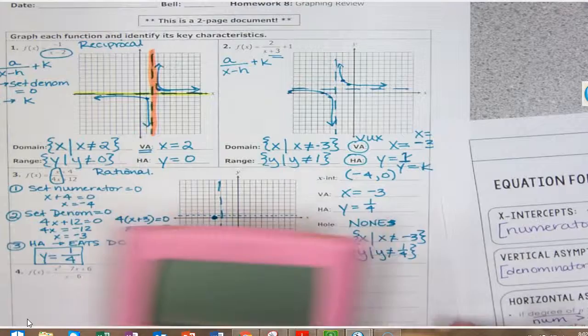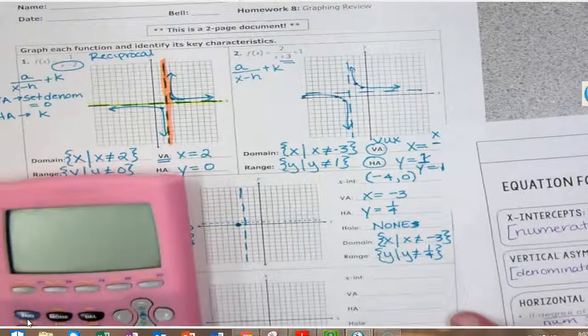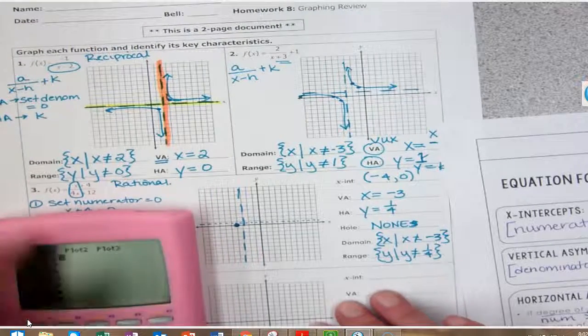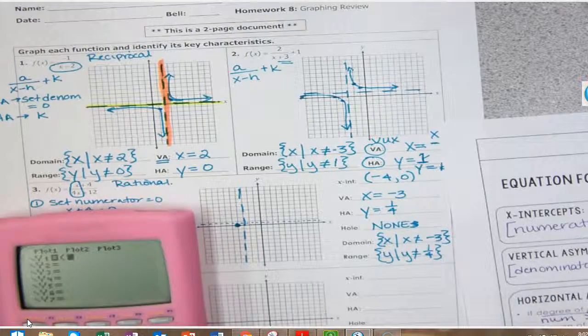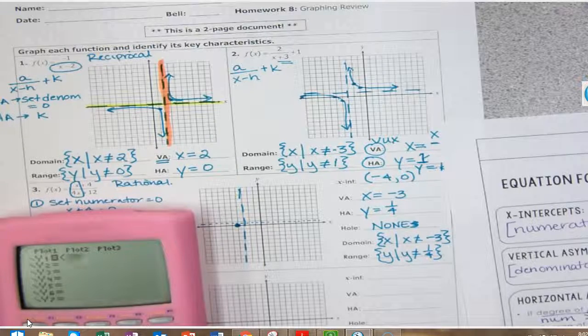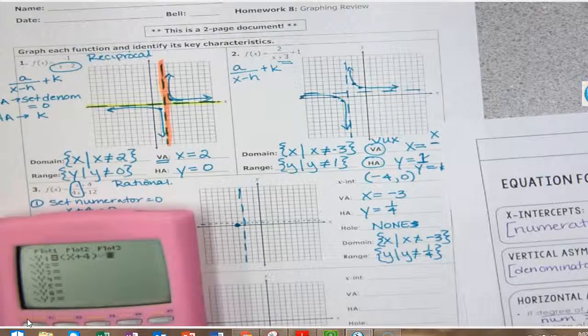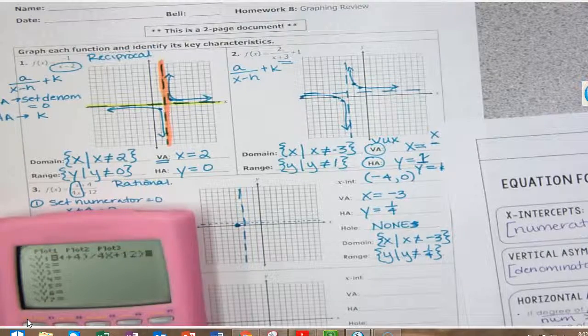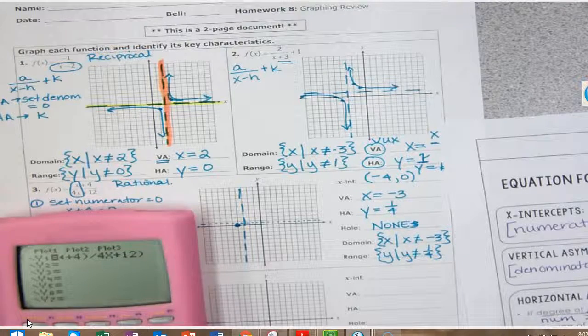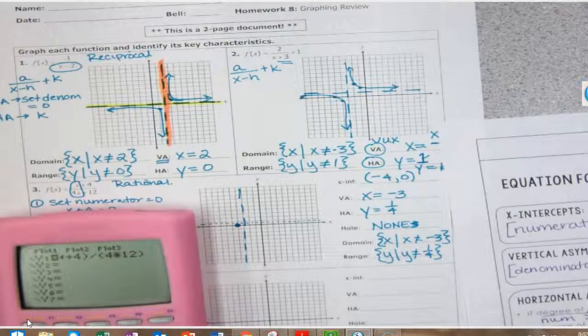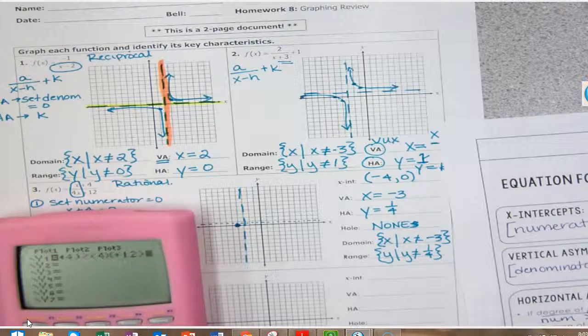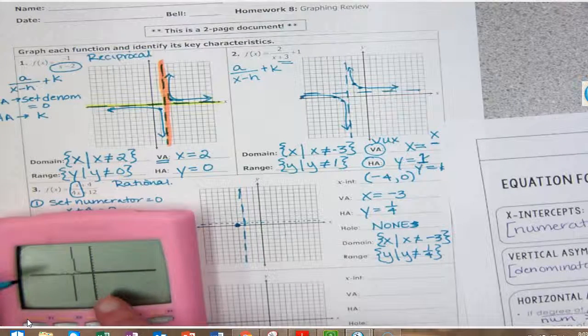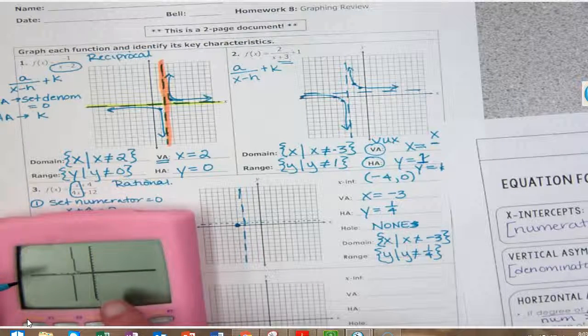So now I'm going to look to my graph, and I'm going to plug in the equation. Just like that, I'm going to use my parentheses. x plus 4 in parentheses, divided by 4x plus 12 in parentheses. Graph. And I'm going to look to make sure that my asymptotes are about the same, and they are.